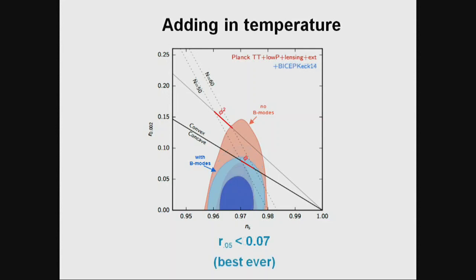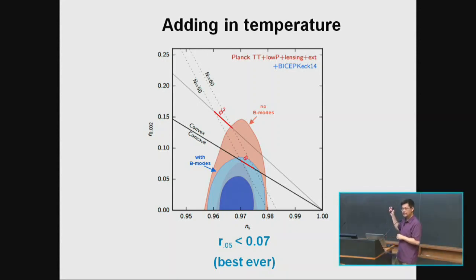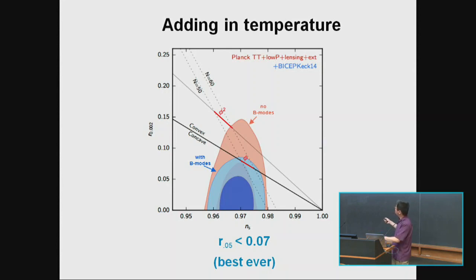A theorist will just look at this ns versus r plot and walk out. When you throw in everything we've got so far — Planck temperature, low-L polarization, lensing, and BICEP-Keck — the φ² model is sitting outside the 2-sigma contour, almost at 3-sigma. BICEP-Keck is the only experiment directly pushing down in the r direction. The latest two-sigma limit is r < 0.07, so one-sigma is around 0.03–0.035.